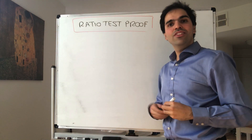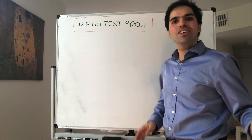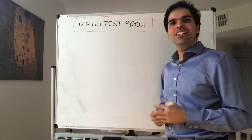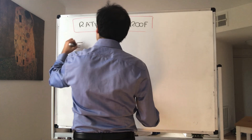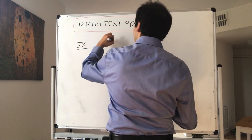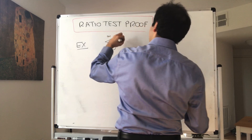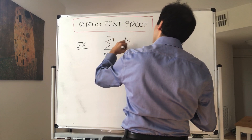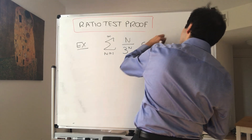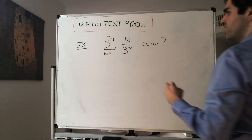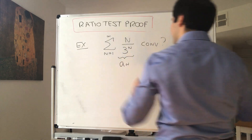Alright, thanks for watching. Today we'll prove the ratio test, which is a lot of fun because we've already done the hard work. Let me just motivate this with an example. The question is: does the following series converge or diverge? We look at the sum of n over 3 to the n. Before we did it with the root test, but now let's see how to do it with the ratio test.